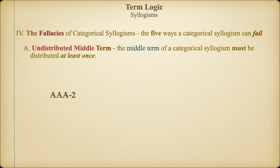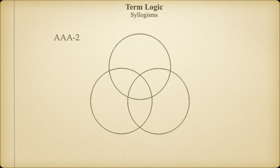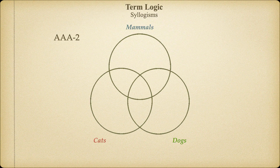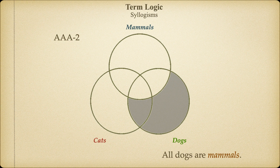Let's take a look at an AAA-2 argument with content added. All dogs are mammals. All cats are mammals. Therefore, all cats are dogs. We'll plug in the minor, major, and middle terms — cats, dogs, and mammals respectively. Since the major premise asserts that all dogs are mammals, we shade regions 6 and 7 to indicate those regions are empty. Now we can see that all remaining dogs are also members of the mammal class. Next, we add the information from the minor premise by shading out region 5, so all remaining cats are also members of the mammal class.